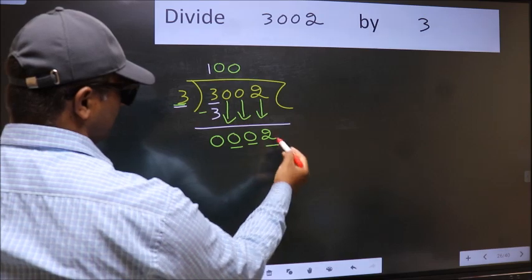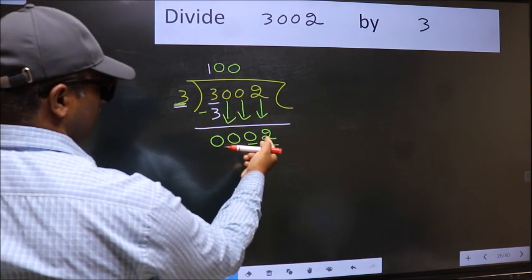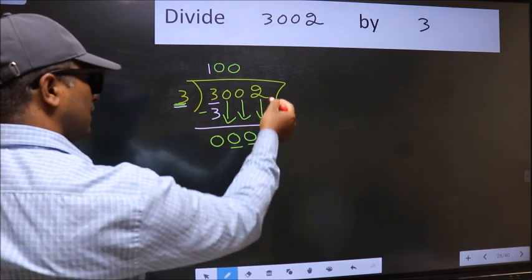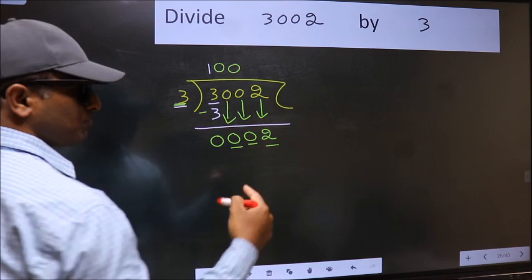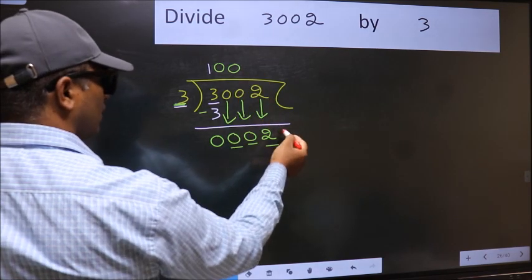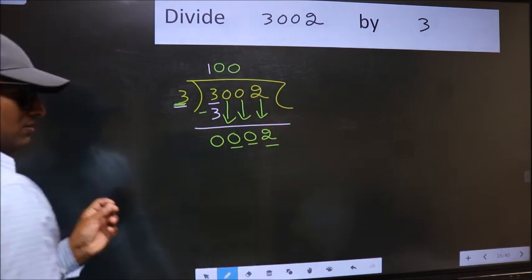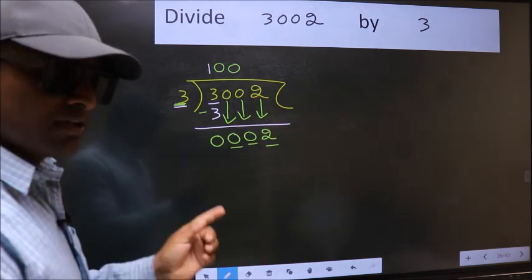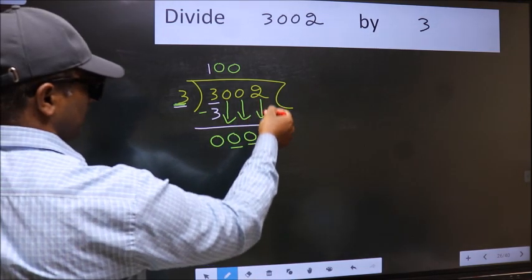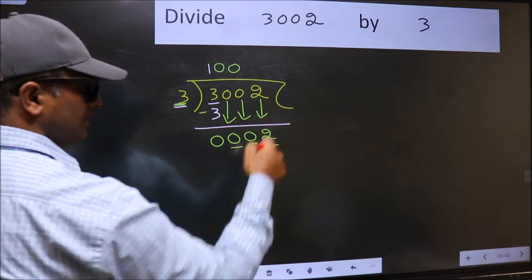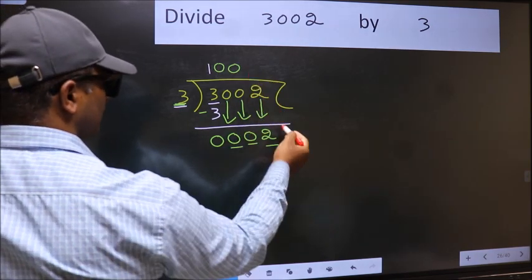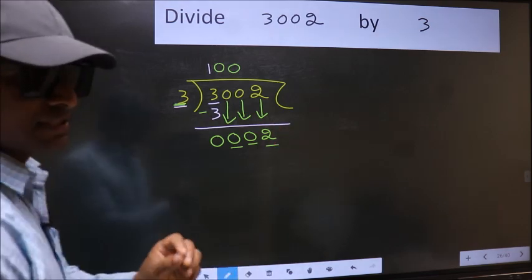And the mistake is this: here we have 2 and here 3. 2 is smaller than 3, and we don't have any more numbers to bring it down. So what many do is they directly put dot, take 0. Which is wrong. Why is it wrong? Because just now you brought this number down, and in the same step you want to put dot, take 0. Which is wrong.